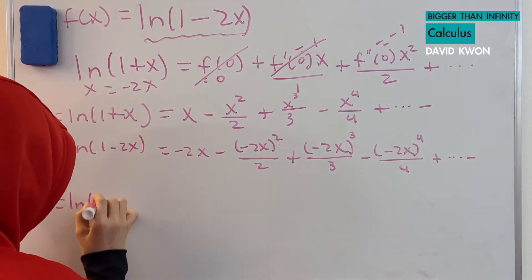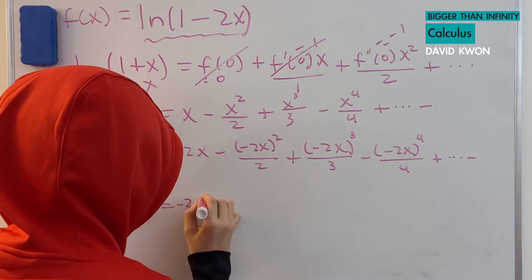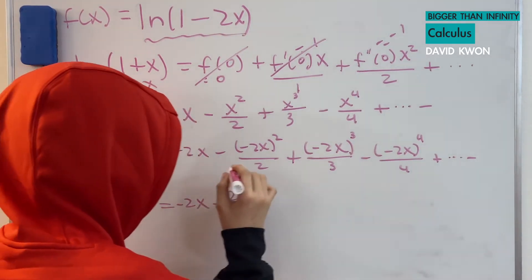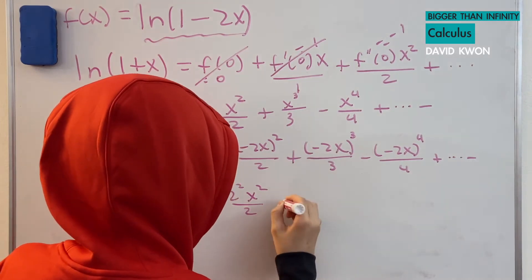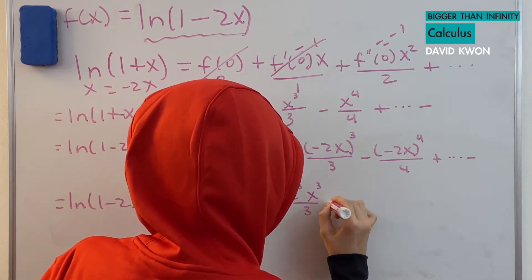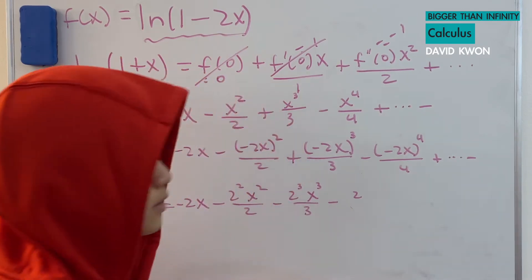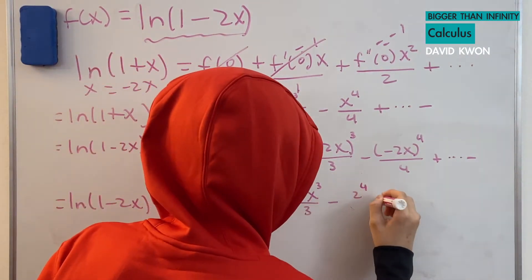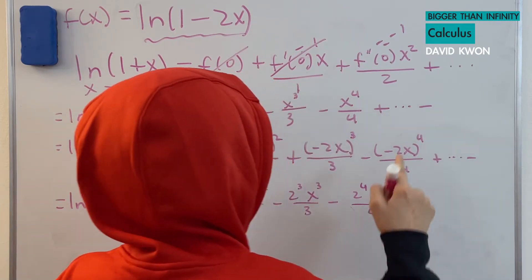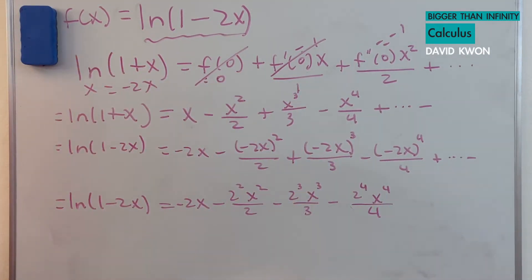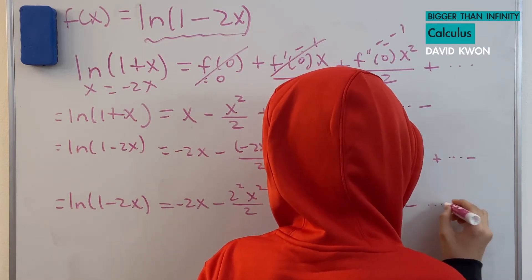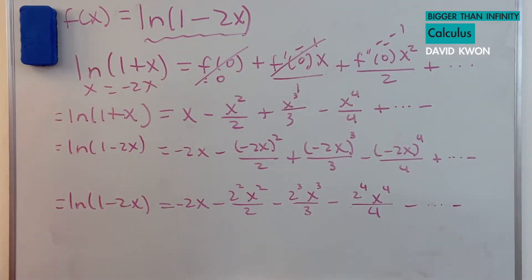So ln(1 − 2x) equals negative 2x minus 2 squared times x squared over 2, minus 2 cubed times x cubed over 3, minus 2 to the 4th times x to the 4th over 4. Notice every term starts with a negative, so the pattern continues with a minus dot dot dot.